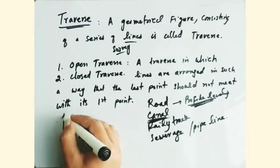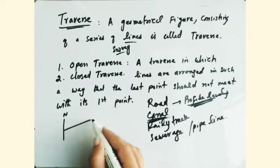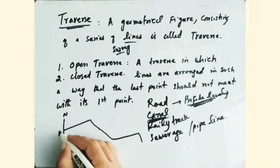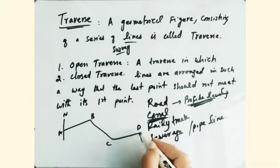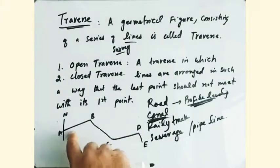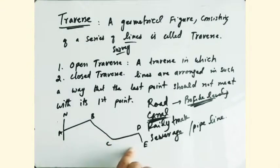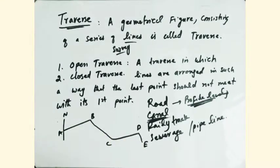This is your direction and these are the lines: A, B, C, D and E. For example, these survey lines which are connected show a canal, road, railway track or any pipeline.